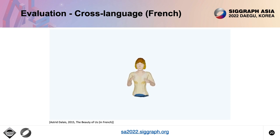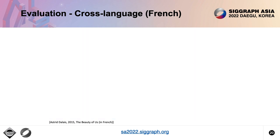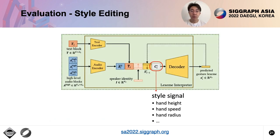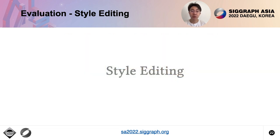We can easily augment our system to achieve motion style editing by adding a style signal block as an extra input of the lexeme interpreter. This video shows the results of controlling hand height, hand speed, and hand radius.